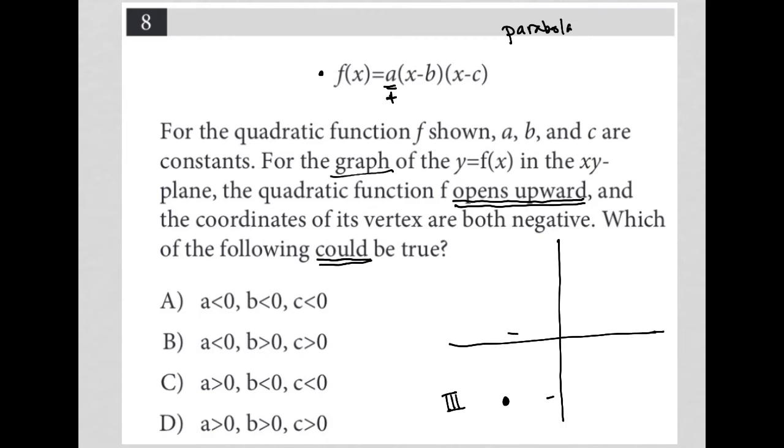It just says what could be true. So looking at answer choice A, it says A is less than zero. We've already established the question has already established that A has to be positive in order for it to be a parabola that opens upward.